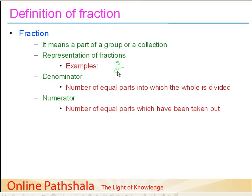The other number we wrote was 9. So this is one fraction: 3 divided by 9. You should pronounce it as '3 parts out of 9 parts.' Then the other one was 3 parts out of 6 parts, and in the third example, we took 2 parts out of 4 parts. This is how a fraction is represented, using two numbers. The number at the bottom — 9, 6, and 4 — is called the denominator, and the denominator represents the number of equal parts into which the whole is divided.